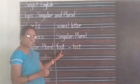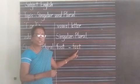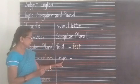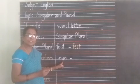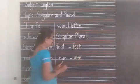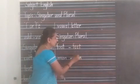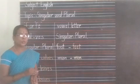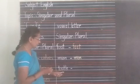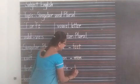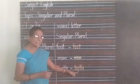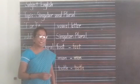The vowel letters change here too. Likewise: M-A-N, man. The vowel A is changed — instead of A, you write E — M-E-N, men. Man is a singular noun; men is a plural noun. Next example: T-O-O-T-H, tooth. To form the plural noun, you change the vowel letters — T-E-E-T-H, teeth. Tooth is singular; teeth is plural.